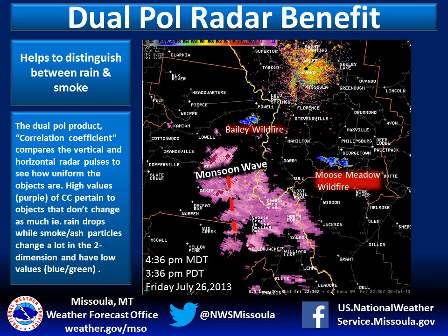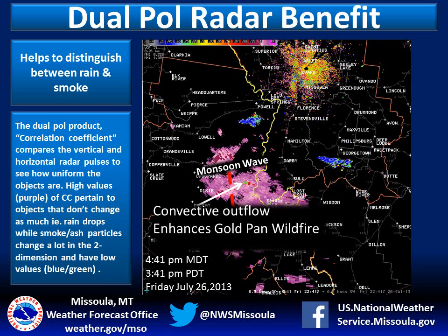There was a monsoon wave moving through the area — also called an upper level disturbance — that helps to initiate showers and thunderstorms. The Bailey wildfire is located in northeast Idaho County, while the Moose Meadow wildfire is in southwest Montana. As this wave was moving across the area, there could have been some sort of convective outflow, which is basically a downdraft from a shower or thunderstorm that helped to enhance the wildfire.